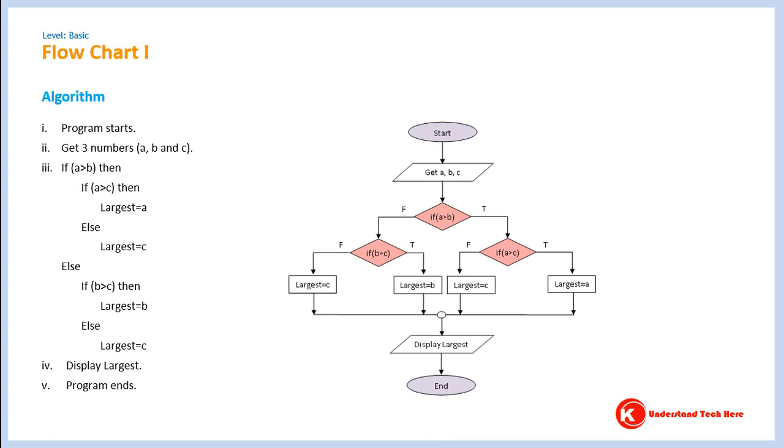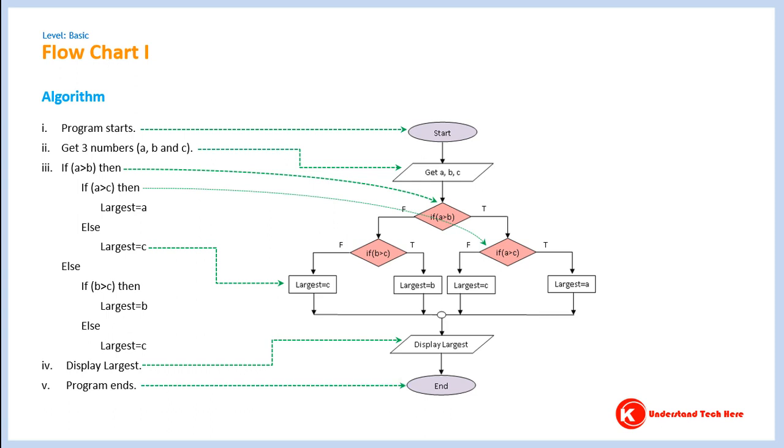Flowcharts are drawn using certain symbols such as ovals, parallelograms, diamonds, rectangles, circles, etc. A start of program is indicated by an oval, an input process is written in a parallelogram, a condition in a diamond, calculation steps in a rectangle, and output process in a parallelogram, and end of a program in an oval. The symbols are connected by arrows called flow lines. They indicate the order in which actions are to be performed.